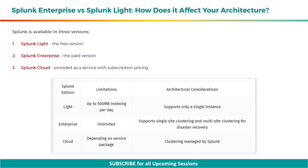Splunk is available in three versions. First is Splunk Lite, the free version, that limits up to 500 MB indexing per day and supports only a single instance. Second is the enterprise version, the paid version with no limitation on indexing, and supports single-site clustering and multi-site clustering for disaster recovery. The third version is Splunk Cloud, provided as a service with subscription pricing.